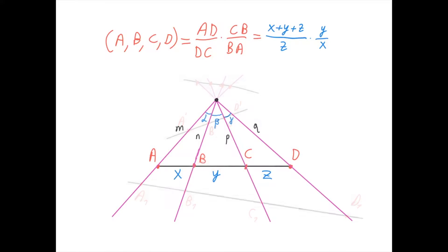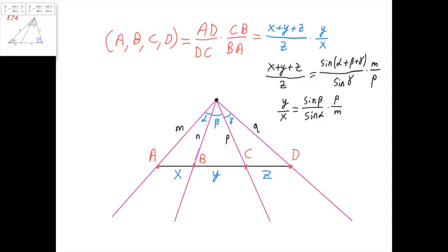Now let's prove this statement. I'm going to denote the three angles here as alpha, beta, and gamma, and I'm going to denote the lengths from this point to a, b, c, and d by m, n, p, and q. Applying the law of sines for this triangle and this triangle, we get that x plus y plus z divided by z equals sine of alpha plus beta plus gamma divided by sine of gamma times m divided by p, which is given here.